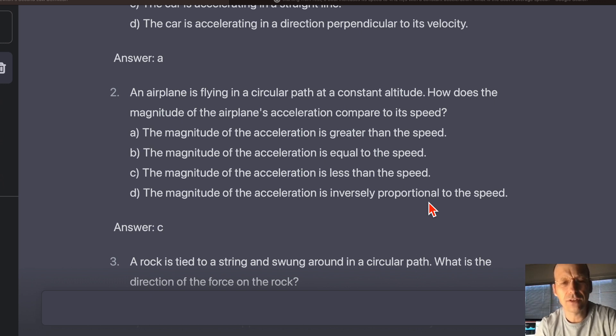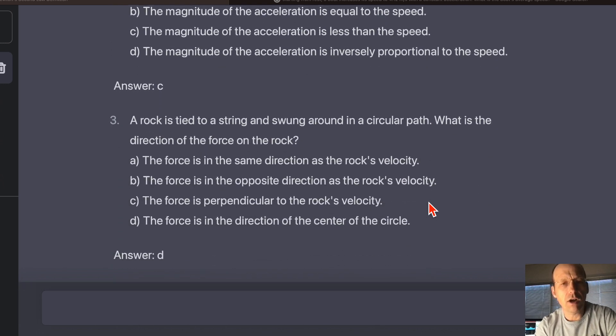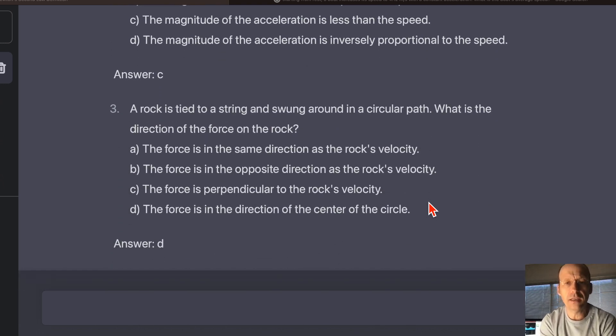Let's see if I can get it to fix these. A rock is tied to a string and swung around a circular path. What is the direction of the force on the rock? The force is the same direction as the rock. Again, it depends on if the rock is speeding up. It doesn't say it's moving at a constant speed. The force is in the opposite direction of the rock's velocity. Technically, that could be true too. Right?